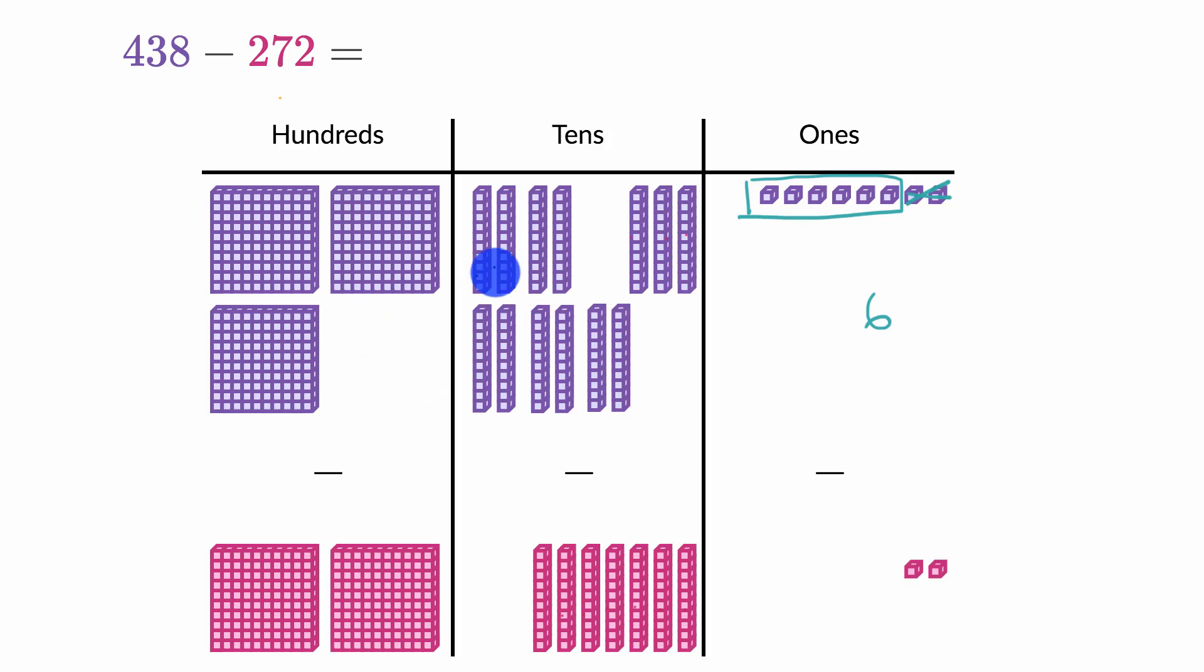That's the same thing as one, two, three, four, five, six, seven, eight, nine, 10 10s. Well, this is useful now because now I have 10 plus three 10s. Or you could say I have 13 10s. And now I can take away seven 10s from that.